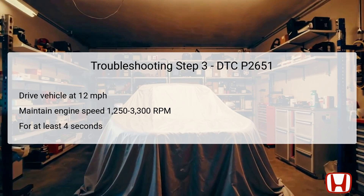The third step in the troubleshooting process is to drive the vehicle on a flat road at a steady speed of 12 MPH or more, while maintaining an engine speed between 1,250 and 3,300 RPM for at least four seconds. This step allows for real-time assessment of system functionality under actual driving conditions. Operating the vehicle at this speed and RPM range will engage the rocker arm oil control solenoid B and test its efficacy in managing oil pressure to the rocker arm oil pressure switch B. The four-second duration is critical for the PCM to gather enough data regarding oil pressure conditions. It is essential to follow local traffic regulations and ensure a safe environment while conducting this test.